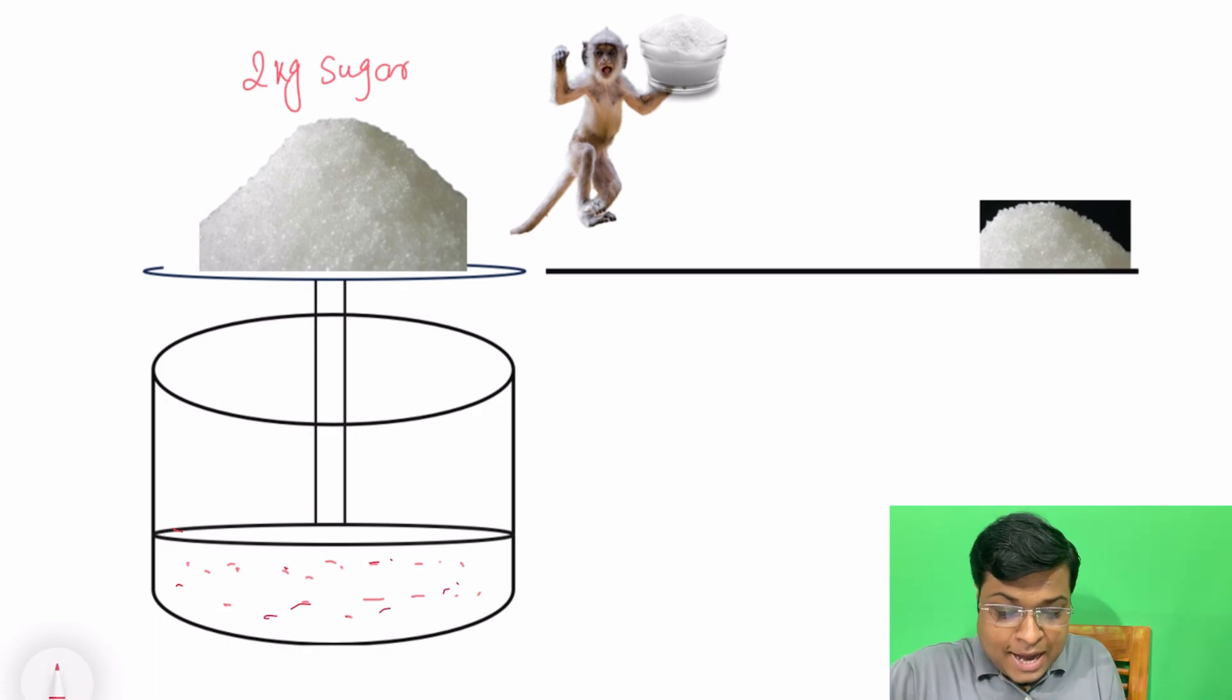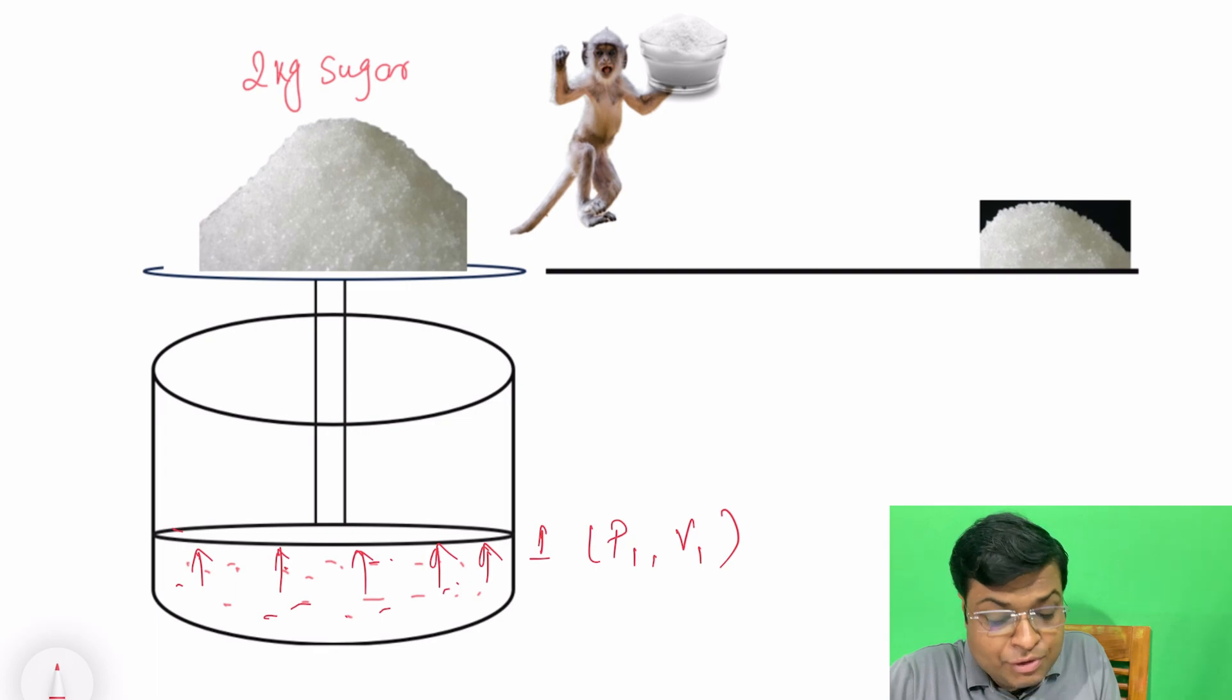And over this piston, we have 2 kilograms of sugar kept over the piston. So this pressure of the gas, which is P1, will balance the weight exerted by 2 kilograms of sugar and also the weight of the piston. So this is state 1 where pressure is P1 and volume is V1.